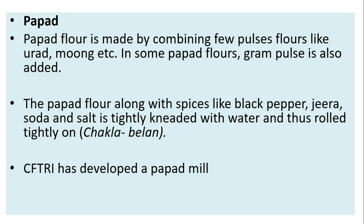Papad flour is made by combining a few pulse flours like urad, moong, etc. In some papad flours, gram pulse is also added. The papad flour along with spices like black pepper, jeera, soda, and salt is tightly kneaded with water and rolled tightly on a chakrabilan. CFTRI has developed a papad mill.